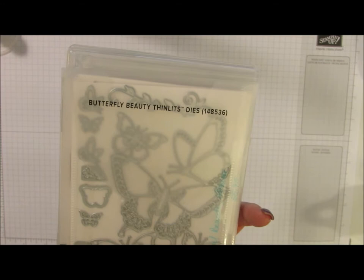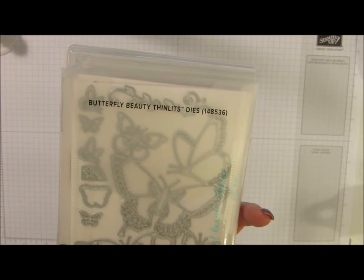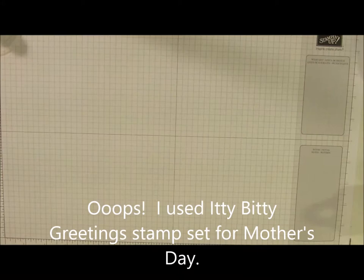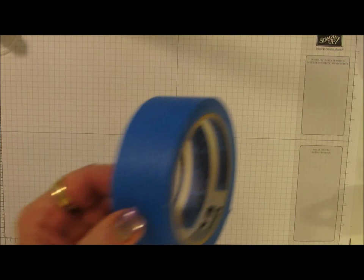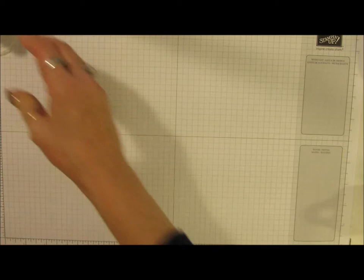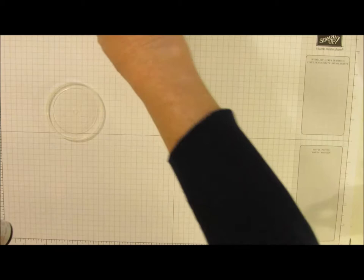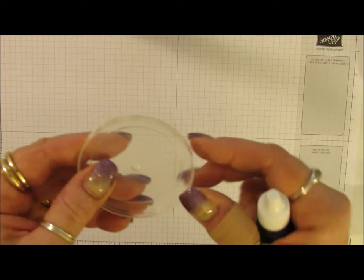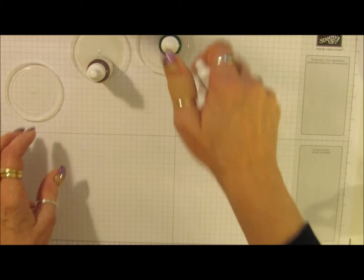The stamp set that I'm using is the Beauty Abounds and the framelits is the Butterfly Beauty Thinlits. For the Mother's Day card I use the happy Mother's Day sentiment from the Well Said stamp set. You're also going to need my aqua painters, some blue painters tape, a Stampin' Up spritzer bottle, and I have the reinkers for Berry Burst, Powder Pink, and Lemon Lime Twist. I'm using the tops of some embellishment containers to hold my ink while I watercolor.